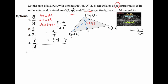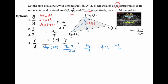Next, slope of OQ: slope of OQ is equal to (14/5 - 4) / (2 - (-2)), which equals -6/5 divided by 4, that is -6/5 times 1/4, which equals -3/10. So slope of OQ is -3/10, which also implies slope of QN is -3/10.